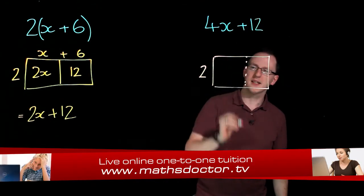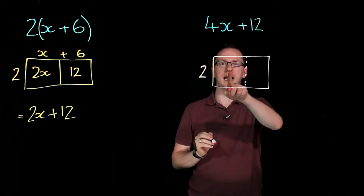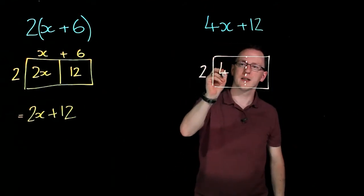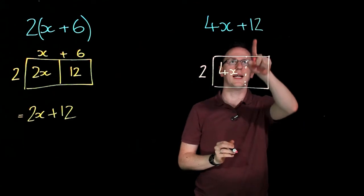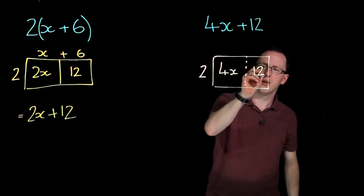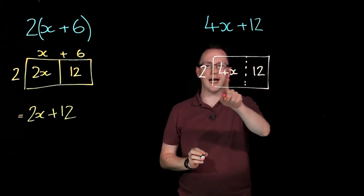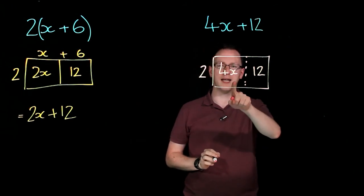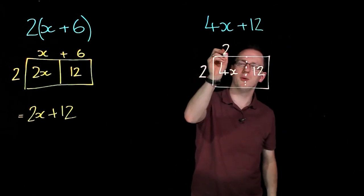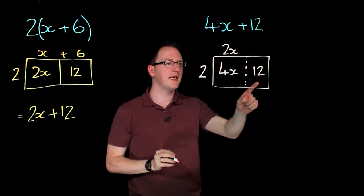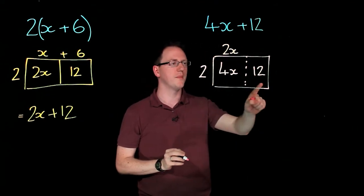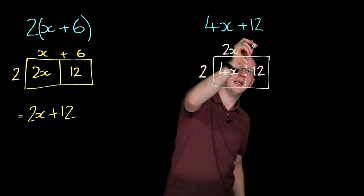Well I want this side length to be 2 and for this area to equal 4x and this area to equal 12. So for this area to equal 4x it has to be 2 times something that makes 4x. Well it's 2 lots of 2x. And for this area to be 12 it's 2 lots of something to make 12 which would be 6.